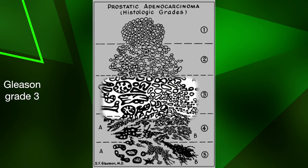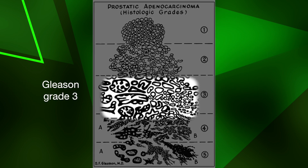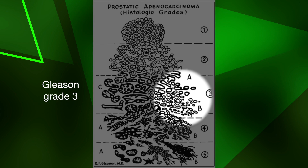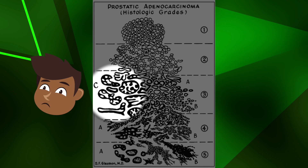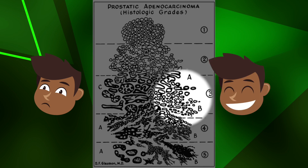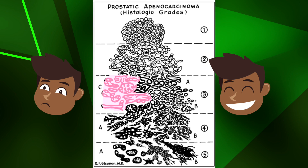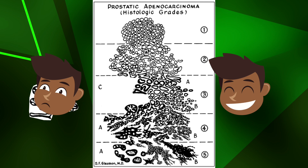Donald Gleason had put prostate cells in grade 3 if they had a neat border around them. Some of these cells had just one central hole, while others had a few central holes, or a big hole formed from smaller holes coming together. The 3 plus 3 men who did poorly had a number of these multi-hole cells, while those who did well had just single-hole cells. The fix was simple: these multi-hole cells were more dangerous, so they were moved to grade 4.